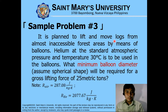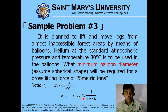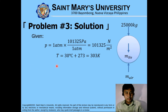For problem number 3, it is planned to lift and move logs from almost inaccessible forest areas by means of balloons. Helium at standard atmospheric pressure and temperature of 30 degrees Celsius is to be used in the balloons. What minimum balloon diameter will be required for the gross lifting force of 25 metric tons? So we are to actually lift a 25 metric ton log using only balloons. One atmosphere converted to Pascal: one atmosphere is equivalent to 101,325 Pascal.